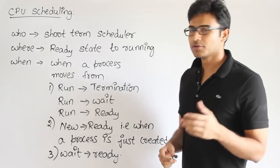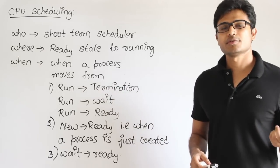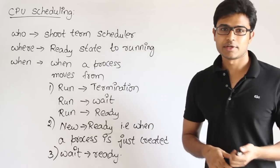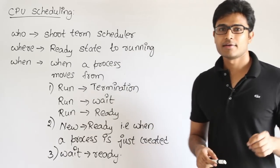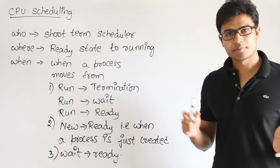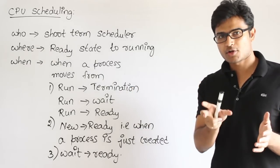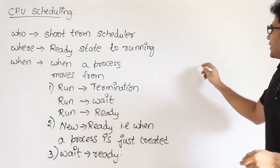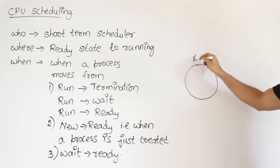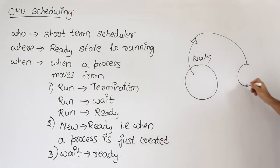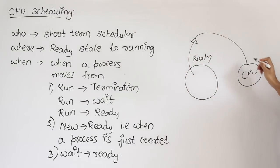CPU scheduling is picking up a process from the ready state. In the ready state there will be many processes; picking one of them and giving it to the CPU is called CPU scheduling. The short-term scheduler does this — it picks one process from the pool of ready processes and gives it to the CPU.